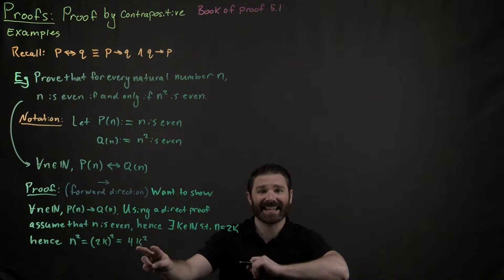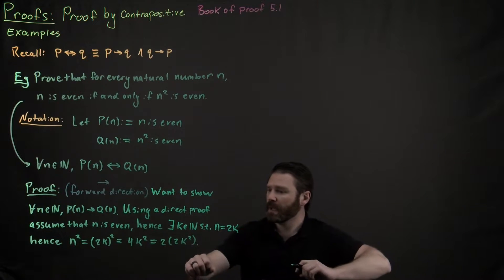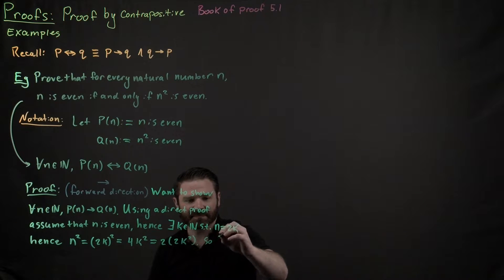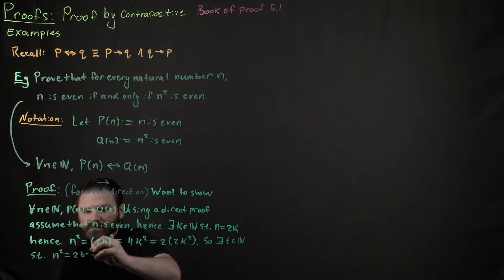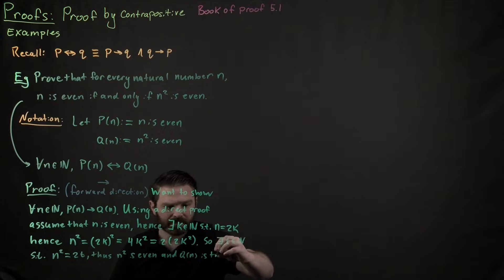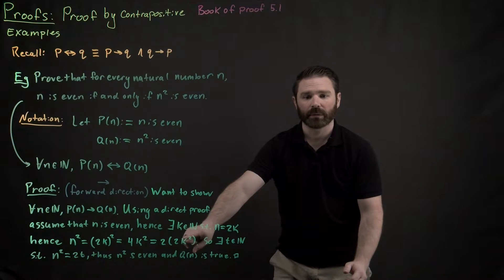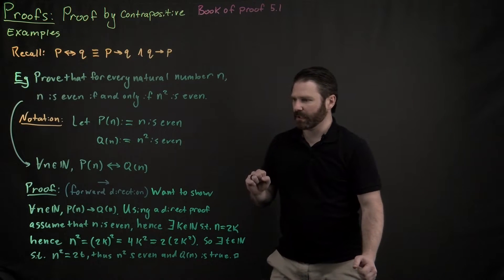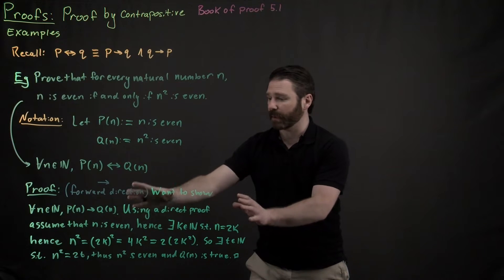We can see that 4k squared is an even number because we can factor out a 2. So I have successfully shown that n squared is even. There exists a t — specifically t equals 2k squared — such that n squared equals 2t, meaning n squared is even. That was my statement Q(n), and the forward direction is complete. I could simply use a direct proof to show it.